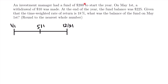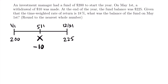The initial balance of the fund is $200, which we write at the beginning of the timeline, and the final fund balance of $225 goes at the end. We do not know the balance on May 1st — that is what we are looking for — so we represent it with variable x. There is also a withdrawal of $10 on May 1st, so we write minus $10 below x. We know the time-weighted rate of return is 18%, or 0.18 in decimal form.